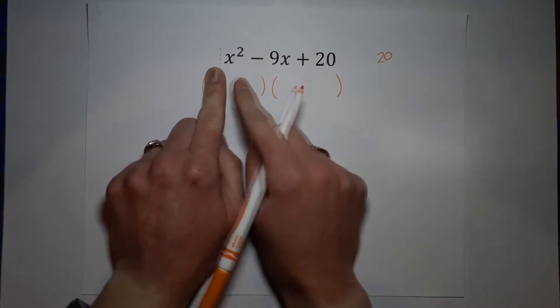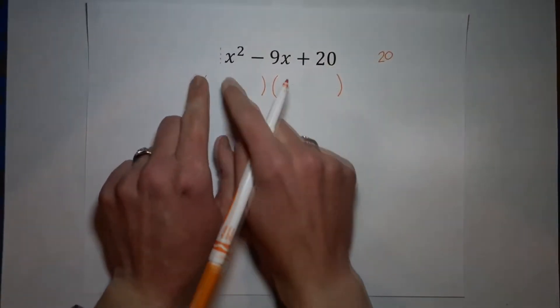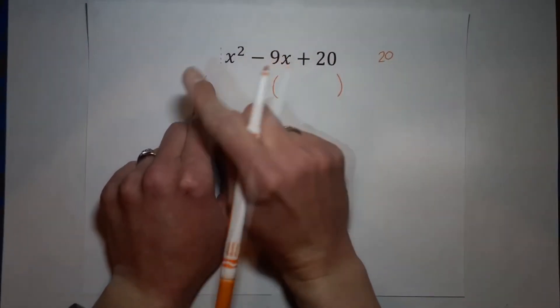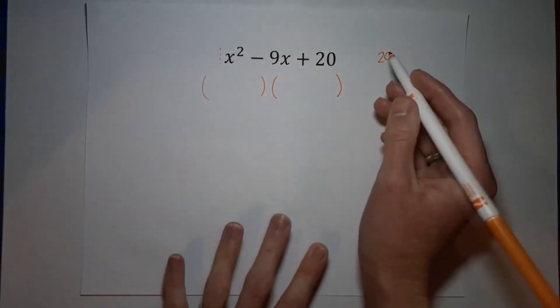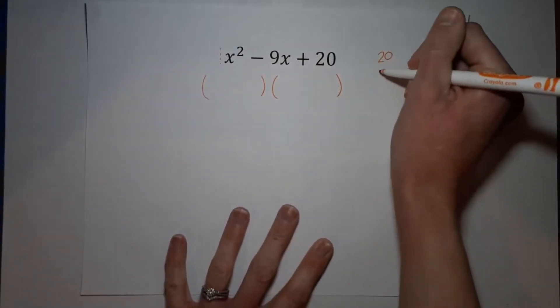So you might think, why did we need to multiply it by that? Well, in other problems, you may have a number out there. So just keep that in mind. It is this multiplied by that. So we've got 20. Okay, now this is kind of the fun part. It's kind of like a puzzle.